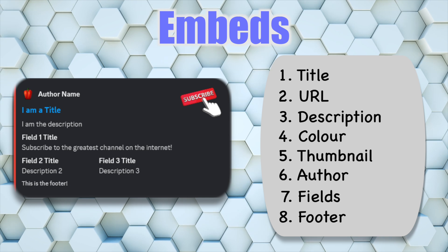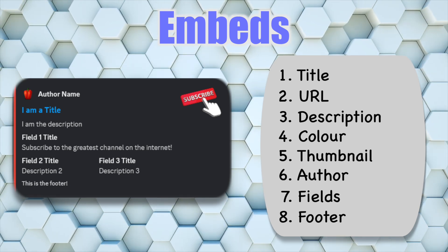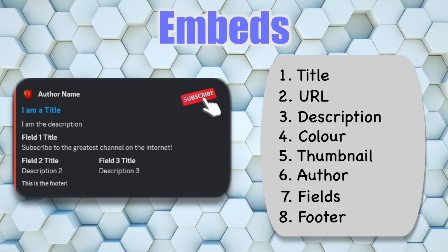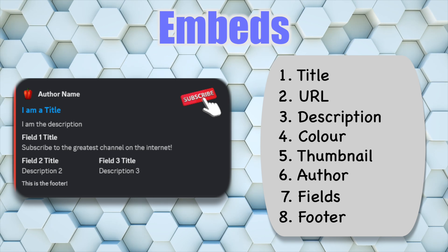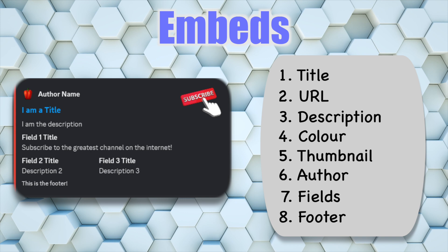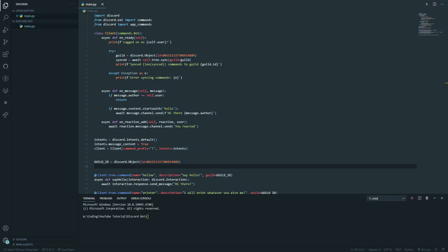So there you go — those are the eight key features of an embed. You might be wondering, do I have to use all of them? No, not at all — you can use as little or as many as you want. Now that we understand what actually goes into an embed, let's get coding. For your Discord bot to show an embed, we need the user to do something to activate the bot — a reason for the bot to send the embed. So we're going to write a slash command.